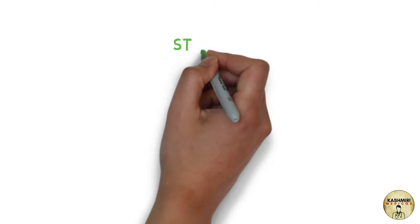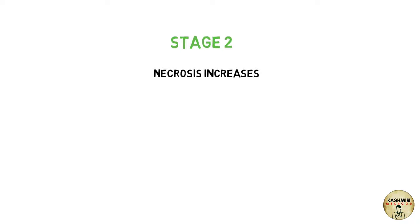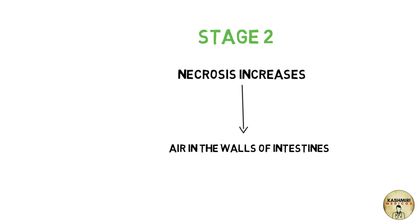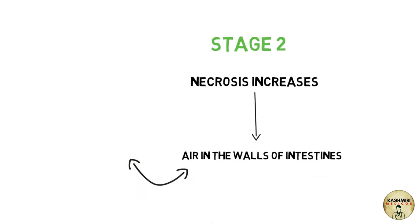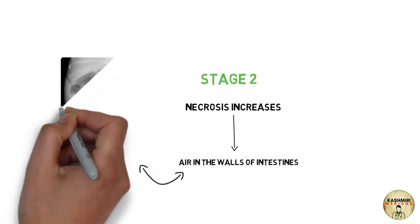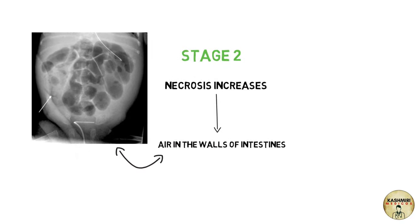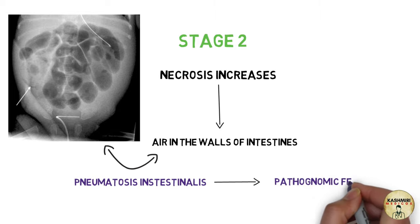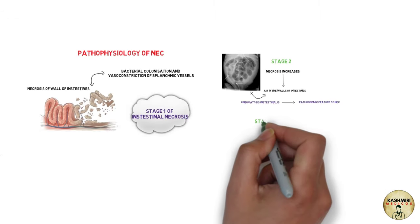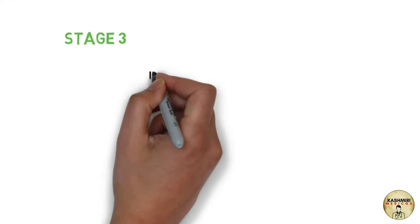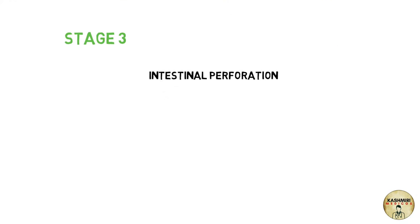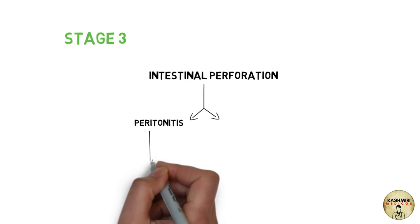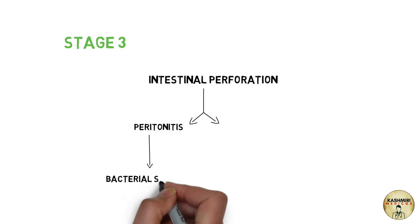When the necrosis further increases and occupies a greater surface of the epithelium, the air or the contents present in the intestines get accumulated in the wall of the intestines — basically air entering into the walls of the intestines. This condition is called pneumatosis intestinalis, and this is the pathognomonic feature of necrotizing enterocolitis.